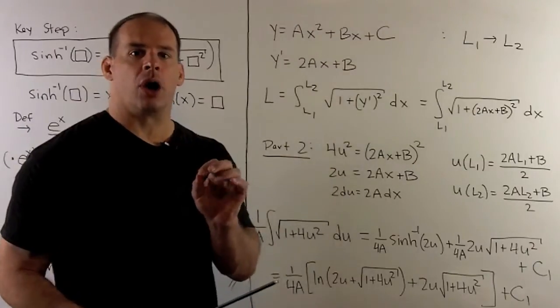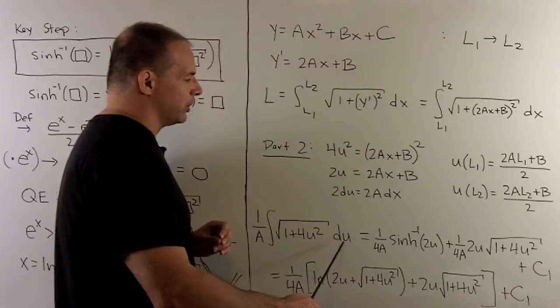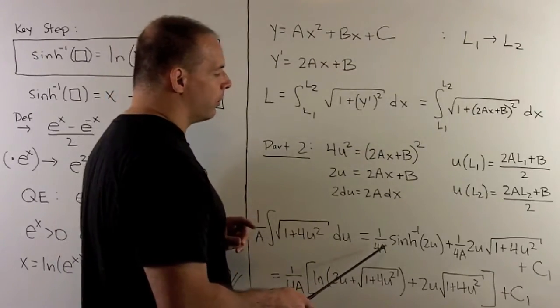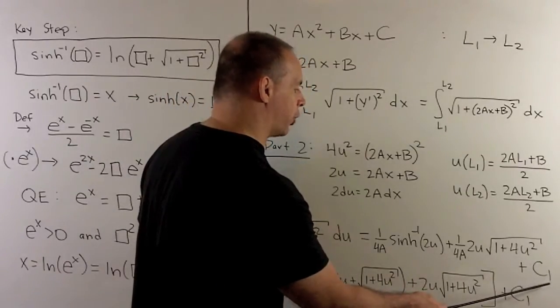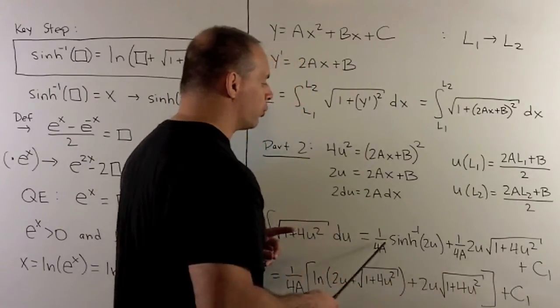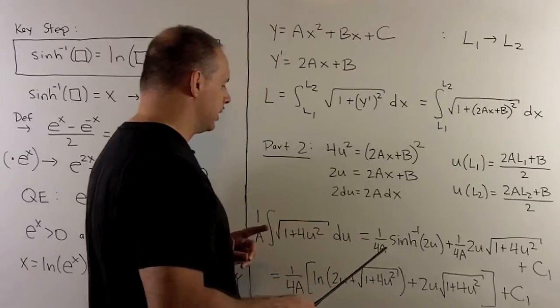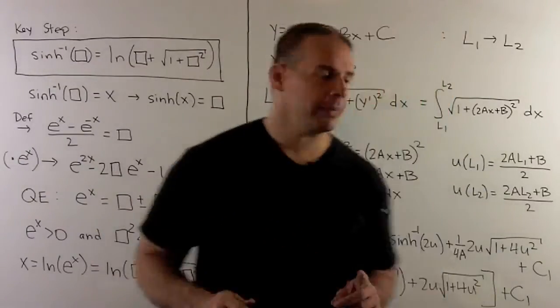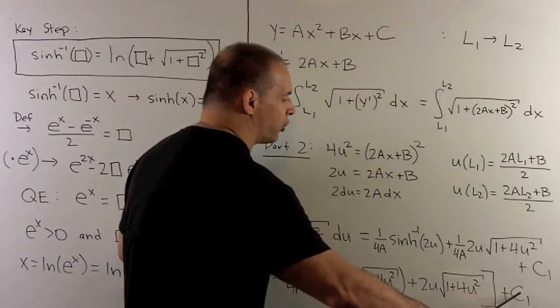Going to our antiderivative from parts 1 and 2, we know that this is equal to, we're going to carry this 1 over a around. So, we have this expression here, this expression here, plus our constant of integration. I'm going to remove the inverse sinh of 2u.